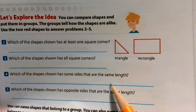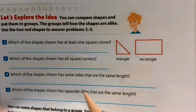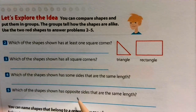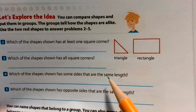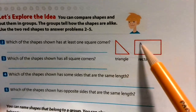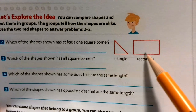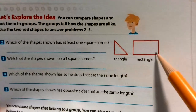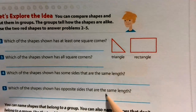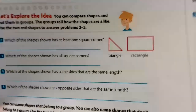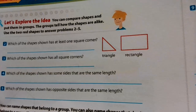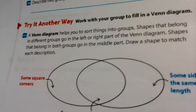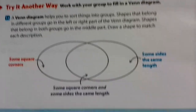The last example: which of the shapes shown has opposite sides of the same length? The opposite sides of a rectangle are the same length, so a rectangle would go there.